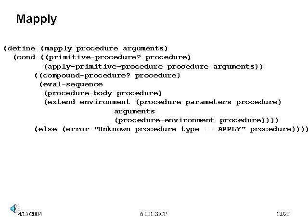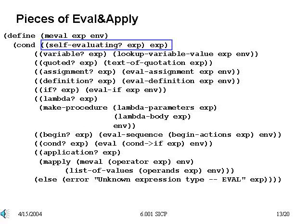Let's quickly look through the pieces of eval, checking that they do what we expect. First, self-evaluating expressions: exp is just a tree structure, and self-evaluating says just return the value of that expression. Things like numbers will simply be returned as numbers. If an expression is just a variable, a symbol, we'll simply look up that variable in the environment.